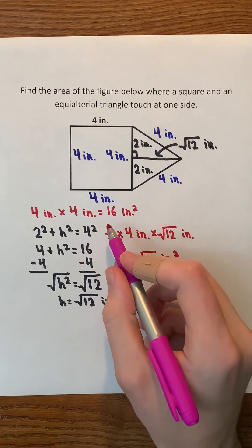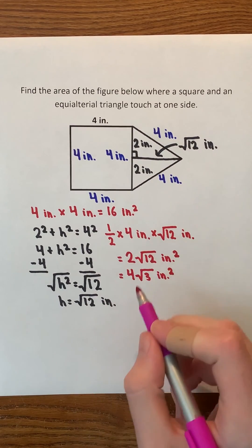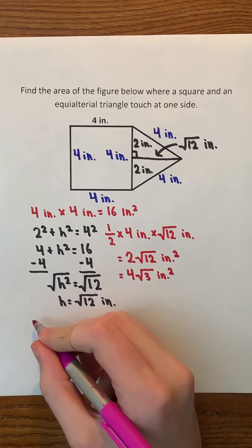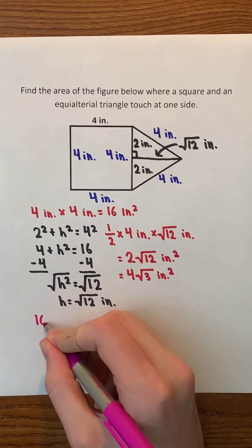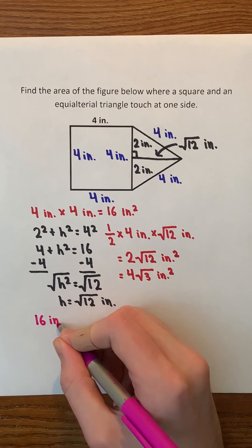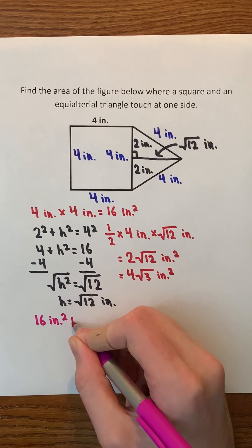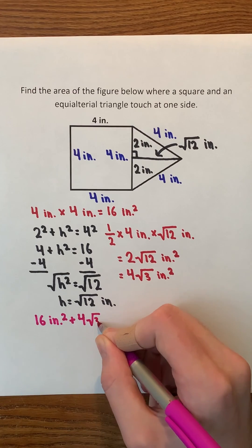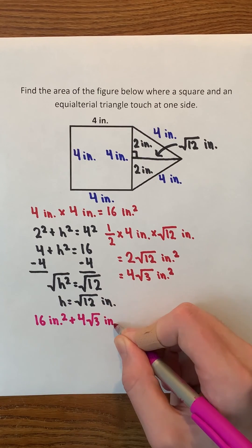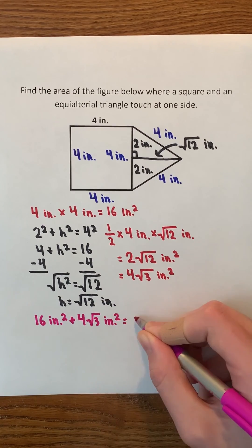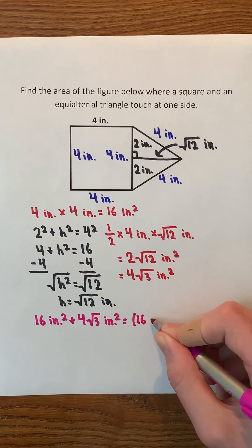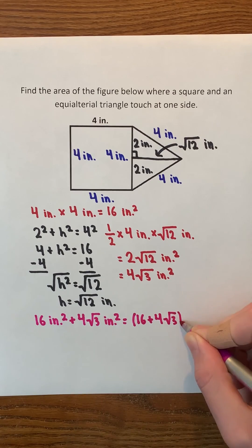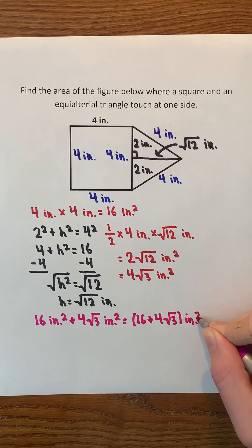The final step is to just add the area of the square and the area of the triangle. So we're going to have 16 square inches plus 4 times the square root of 3 square inches, which is 16 plus 4 times the square root of 3 square inches — the area of the figure.